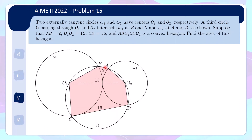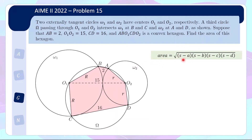When I first saw this problem, one of the first things that come to mind is that we can actually break this hexagon up into two cyclic quadrilaterals. The dotted line is very suggestive. And we know a formula for finding the area of a cyclic quadrilateral — it is given by the square root of (s-a)(s-b)(s-c)(s-d), where s is the semi-perimeter. We can put in capital R for the bigger radius and small r for the smaller radius, and we actually do know all the sides, at least in terms of the two r's.